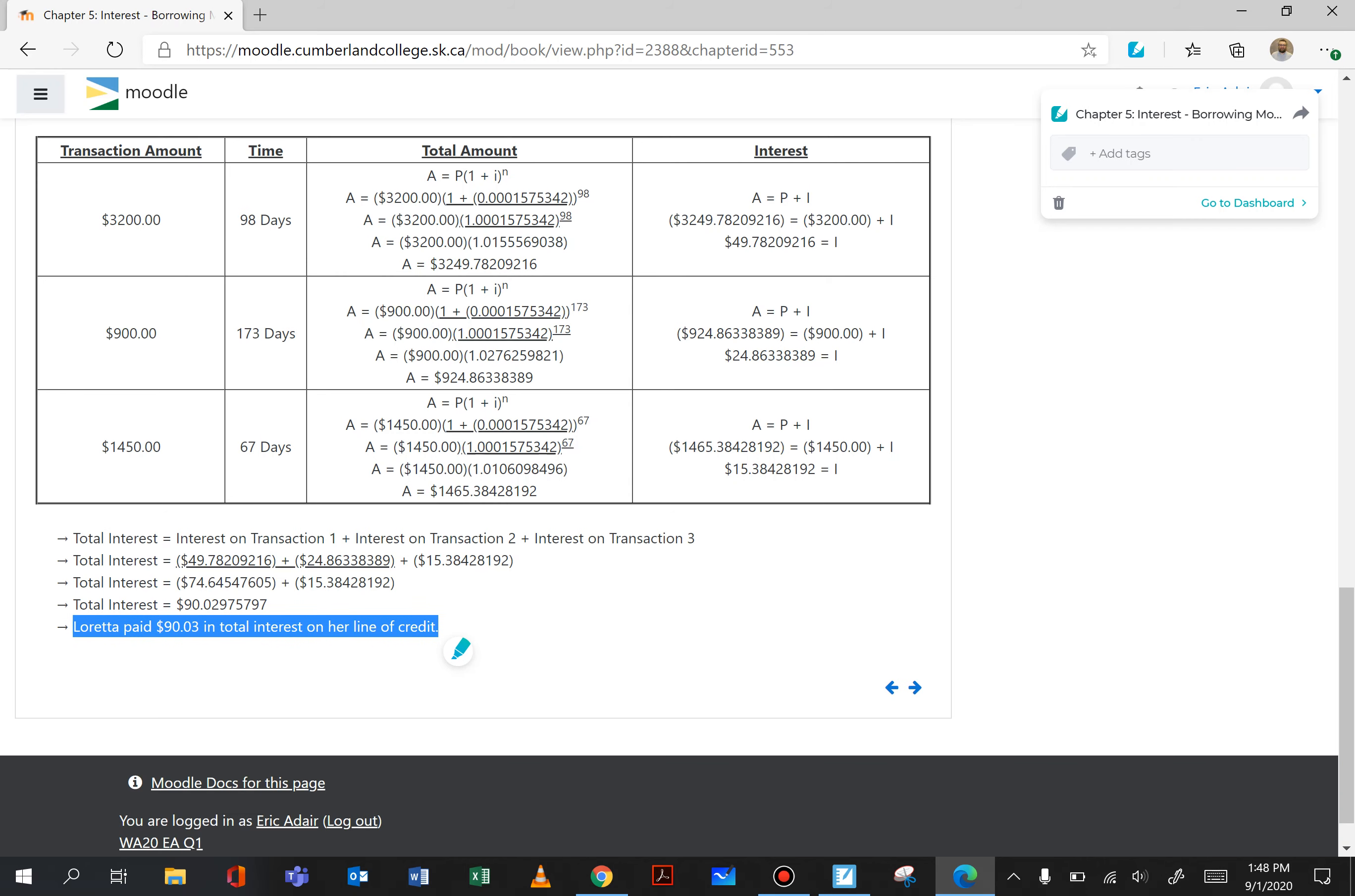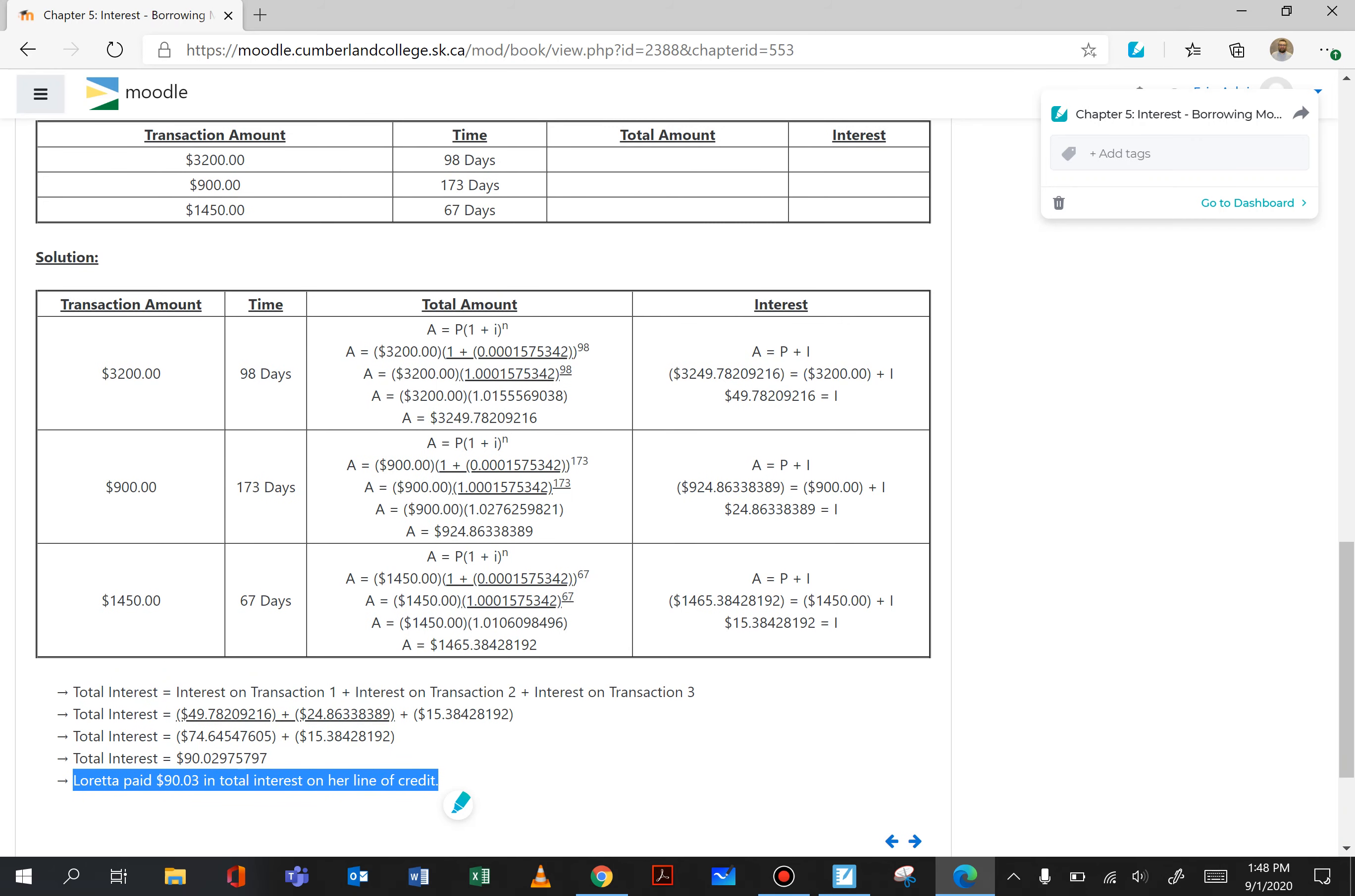And you can see in the chart that we're just changing 3,200 to 900 and 1450, and the exponent of 98 is changing to 173 and 67. Everything else is staying the same including the interest rate.